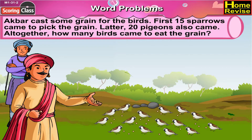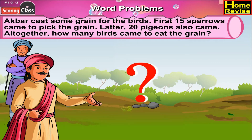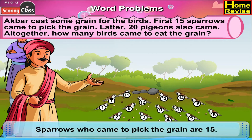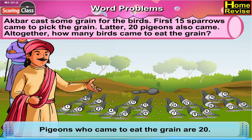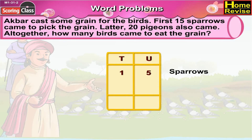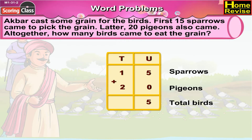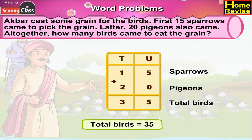Akhtar cast some grain for the birds. First, 15 sparrows came to pick the grain. Later, 20 pigeons also came. Altogether, how many birds came to eat the grain? 15 sparrows plus 20 pigeons would be the total number of birds. In the units we have 5 plus 0, that makes 5. In the tens we have 1 plus 2, that is 3. So, total number of birds: 35.